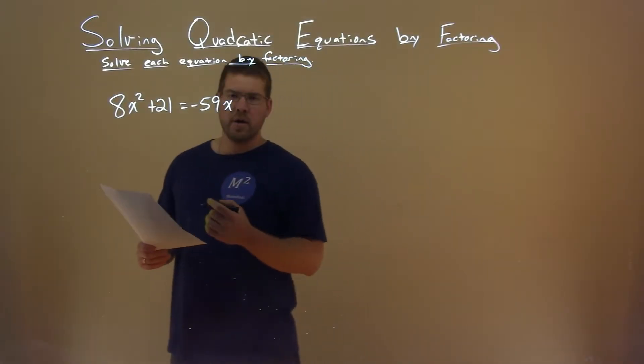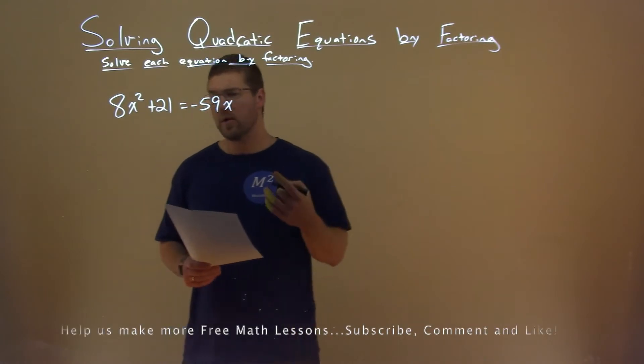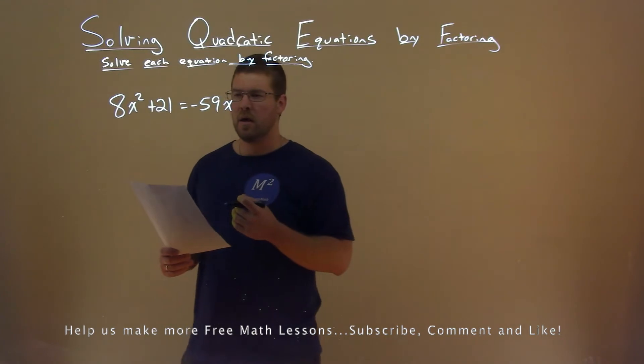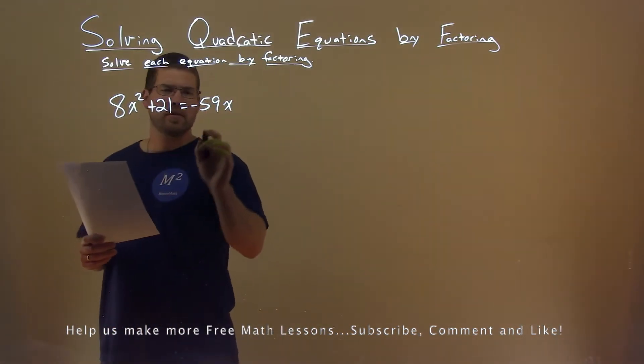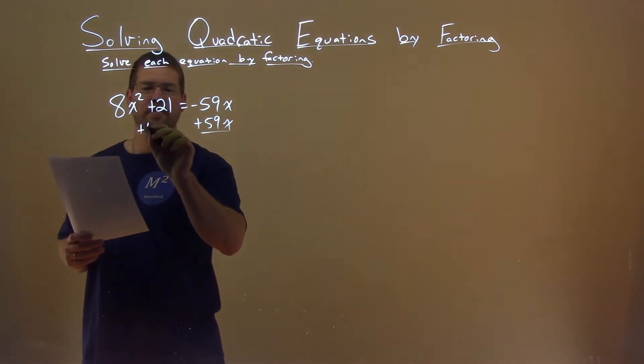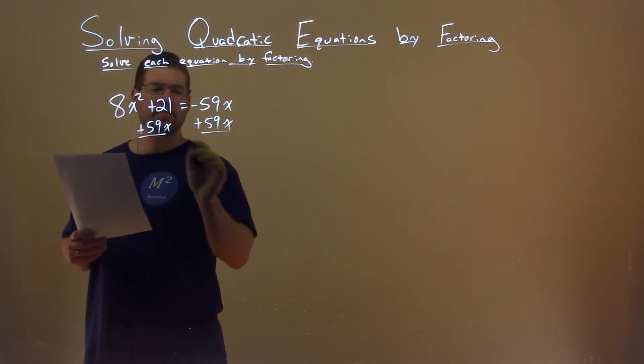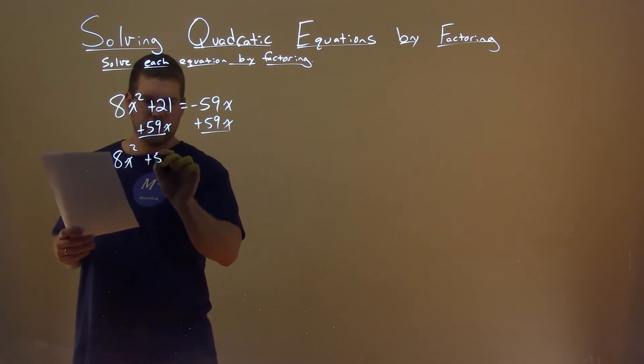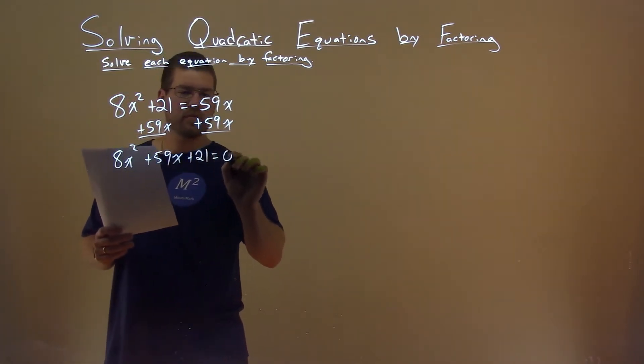We're given this problem right here: 8x squared plus 21 equals negative 59x, and we want to solve this by factoring. Let's bring everything over to the same side. I'm going to add 59x to both sides here. That brings out 8x squared by itself, plus 59x, plus 21 equals 0.